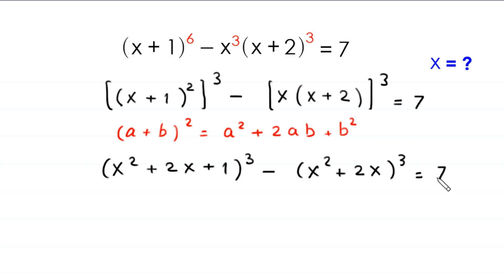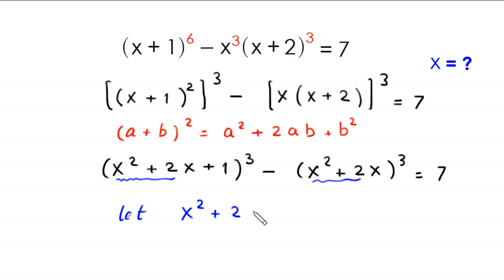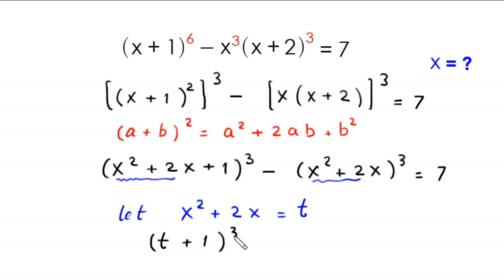Now we suppose that x² + 2x = t. So this equation will become (t + 1)³ minus t³ = 7.